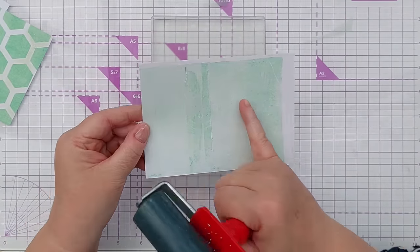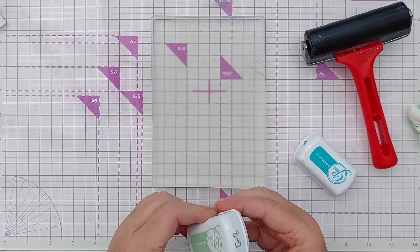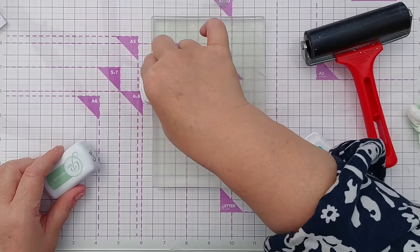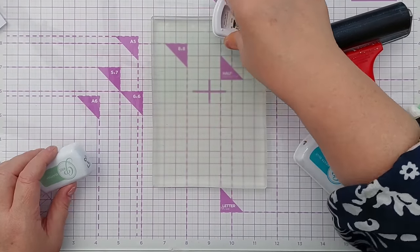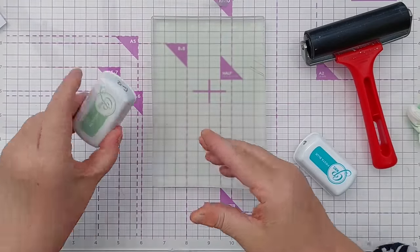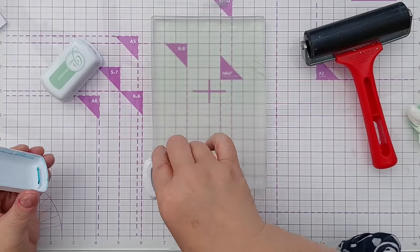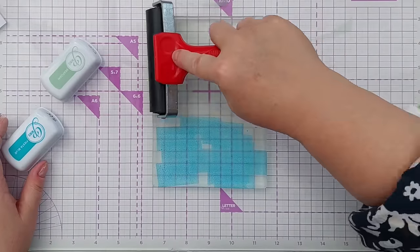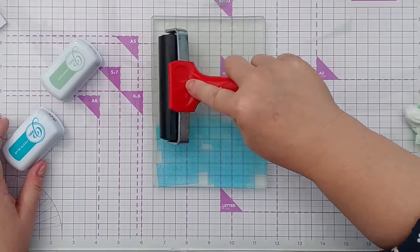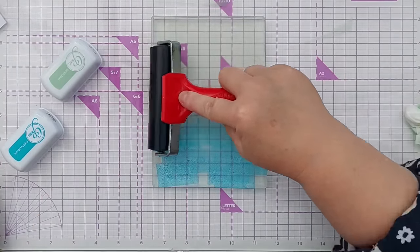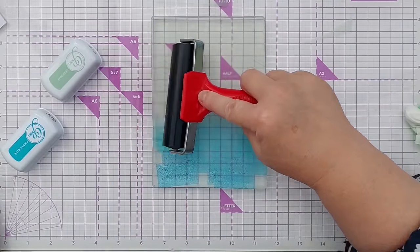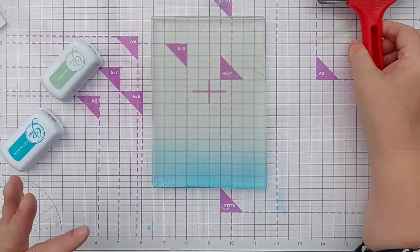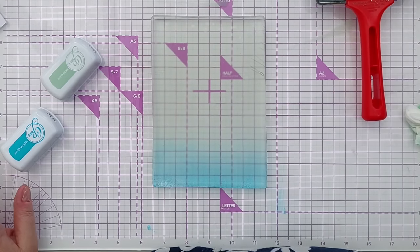Distress oxides aren't the only inks to work on a gel plate. The Catherine Pooler inks will work as well. So there's a bit of sea foam there and a bit of fiesta blue. Again just roll them out, go up and down that way, that way, over the join to get a nice blend. These are translucent inks so they will layer up differently to distress oxides.